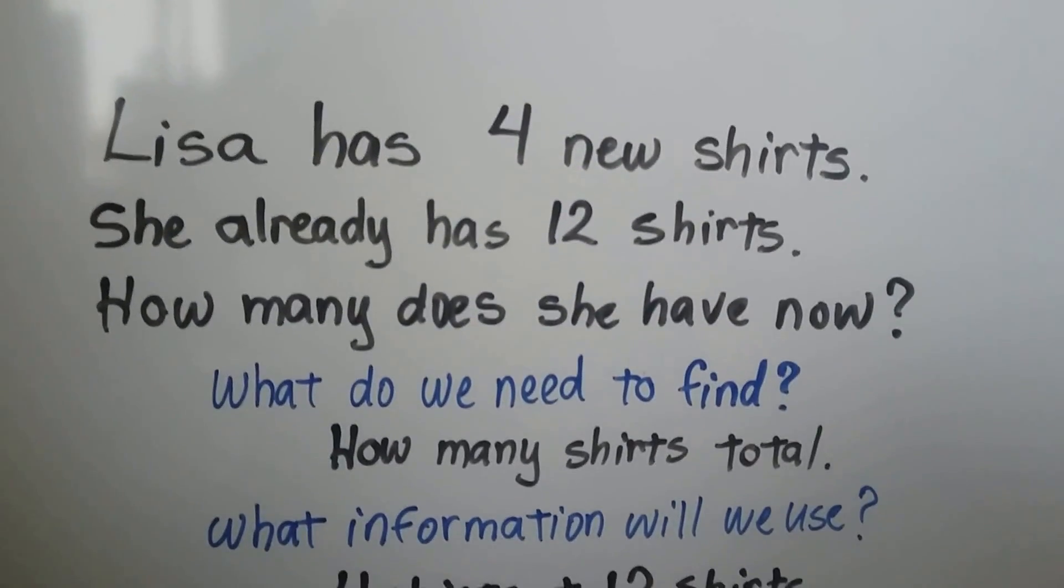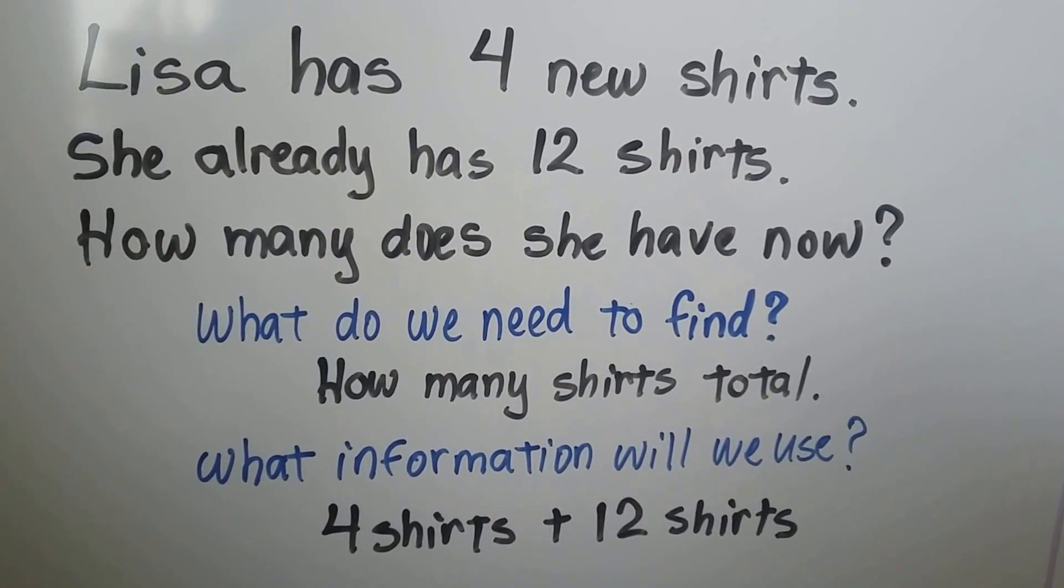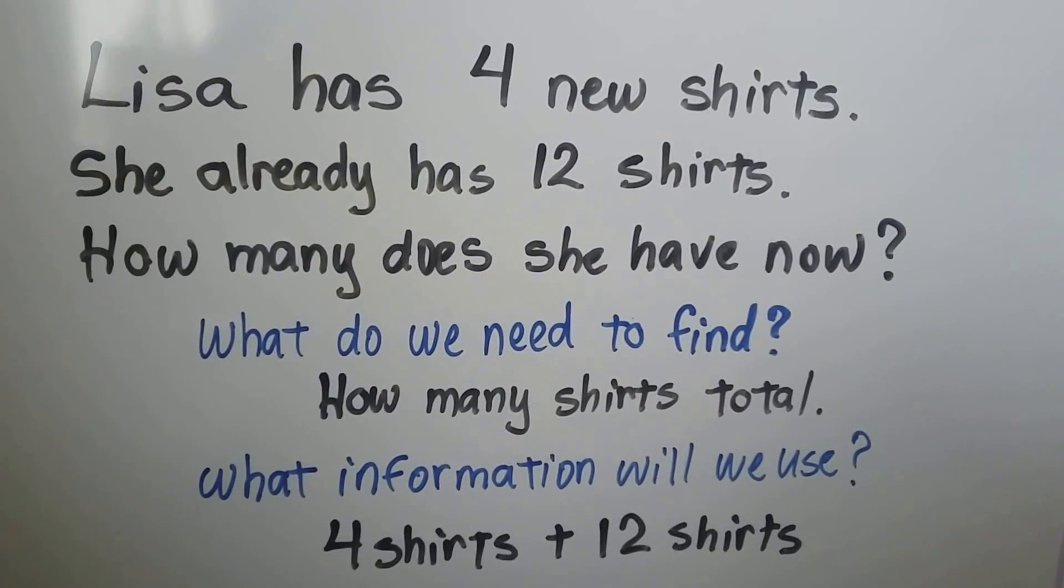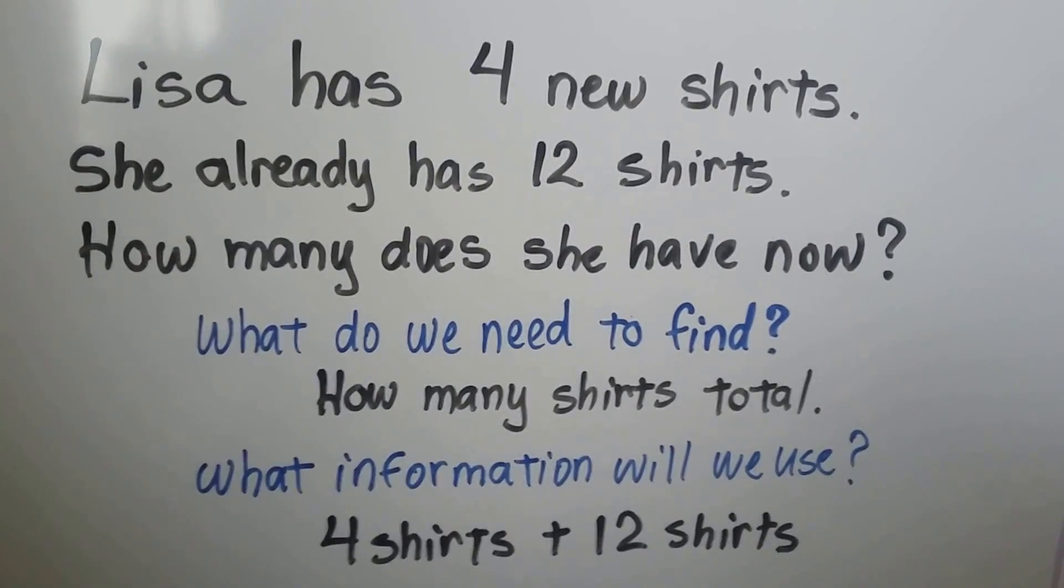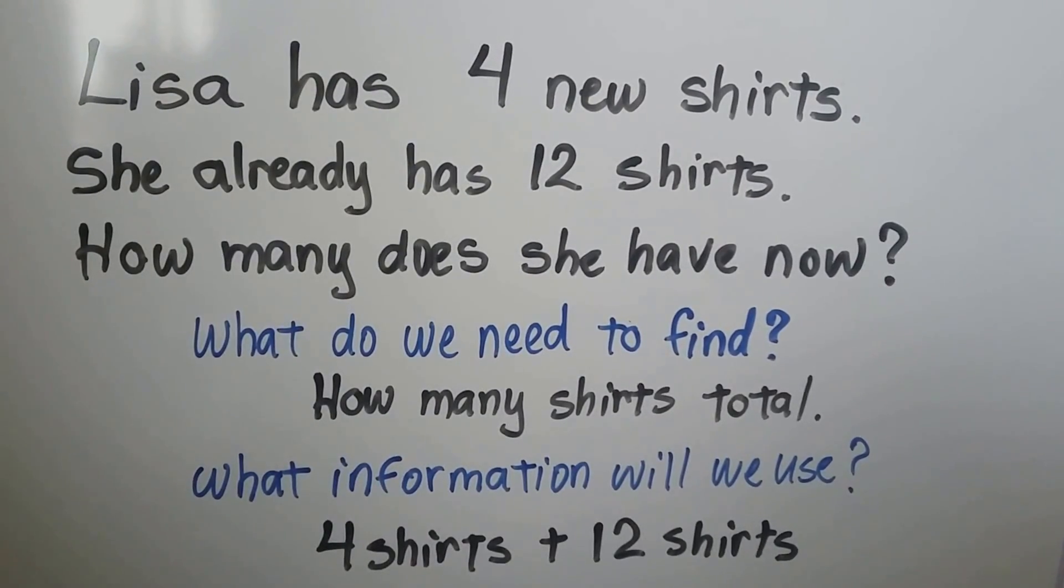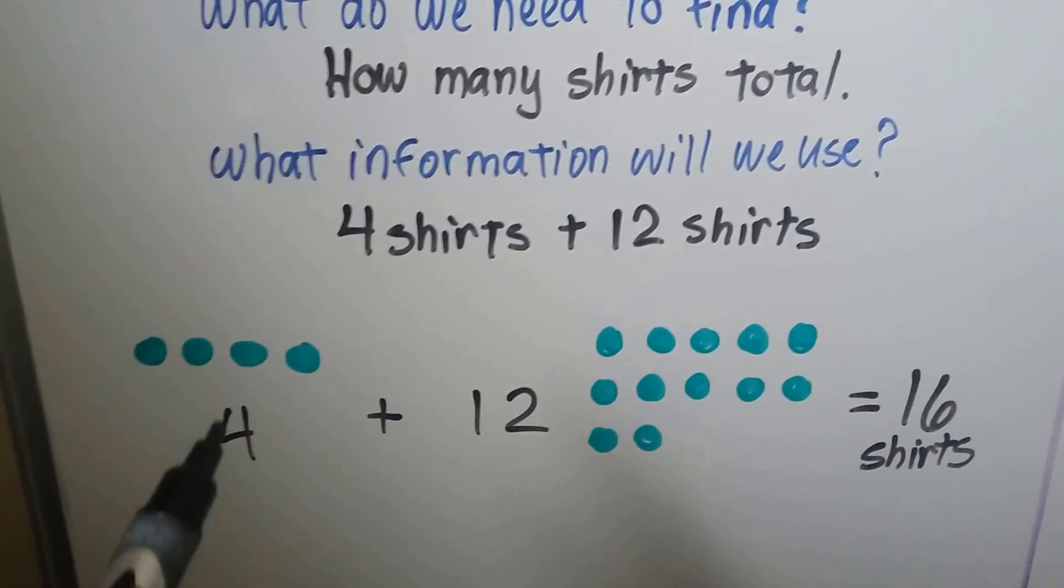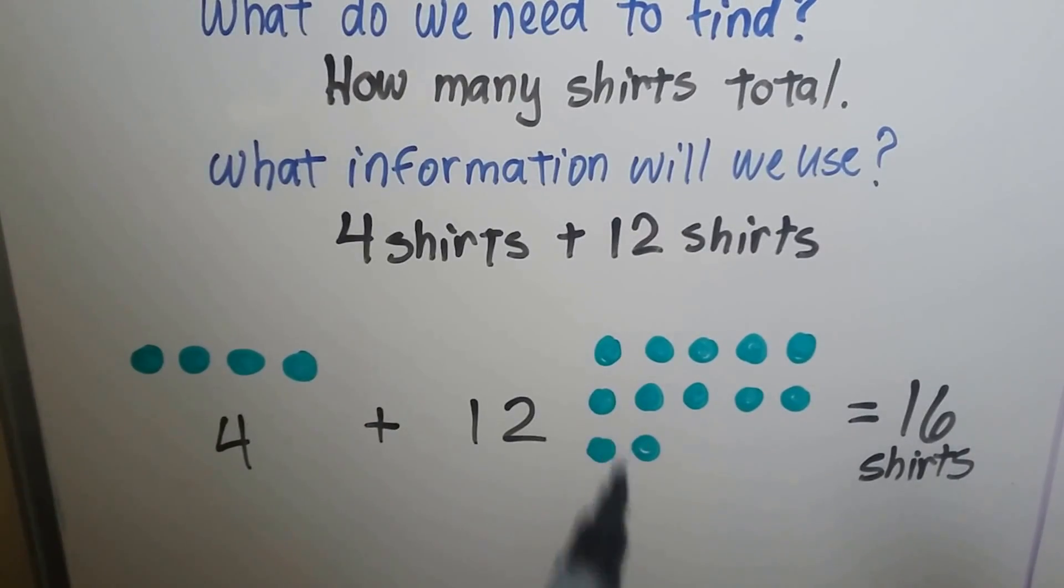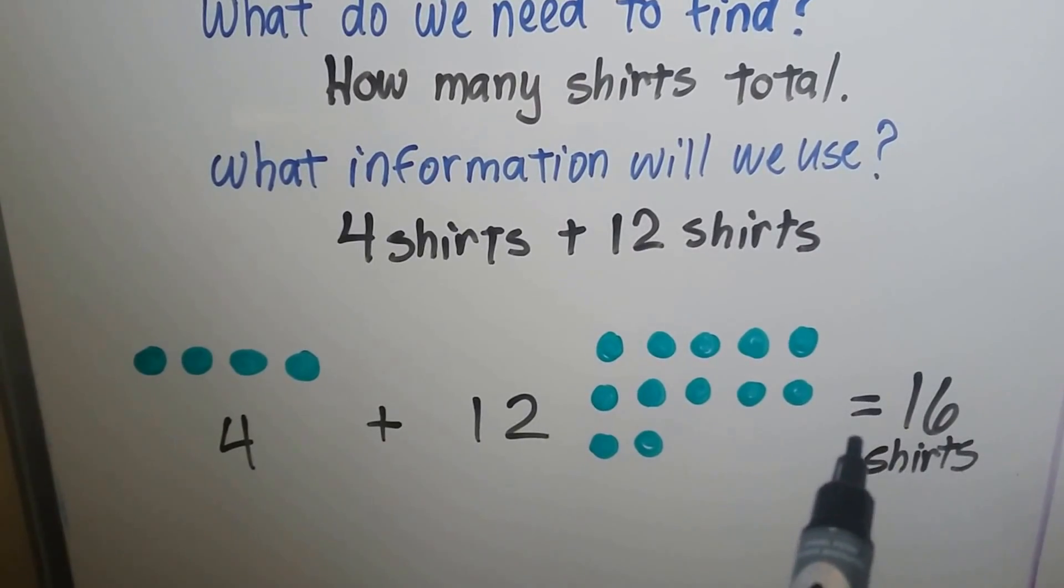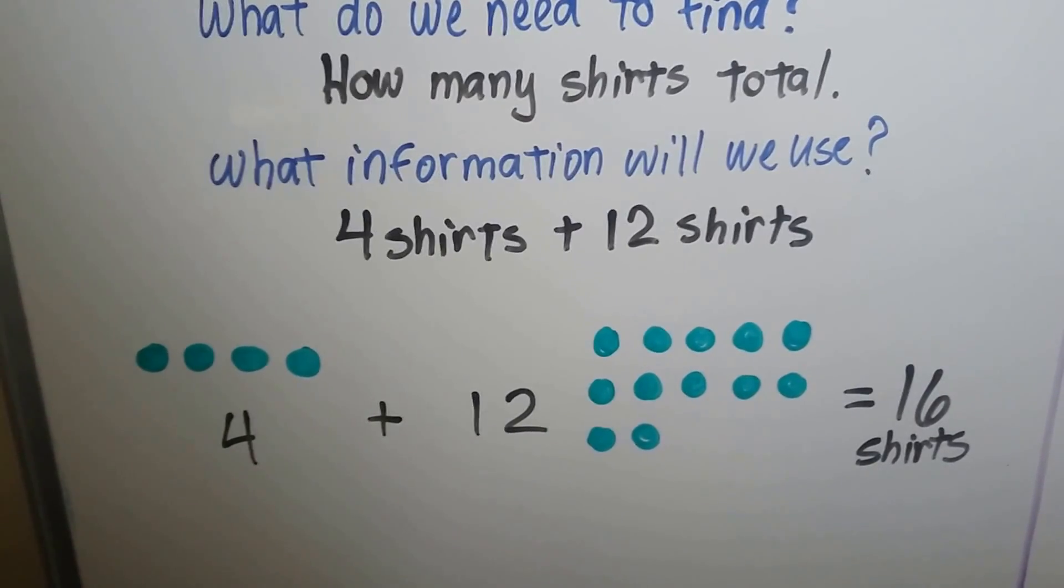Lisa has four new shirts. She already has twelve shirts. How many does she have now? What do we need to find? We need to find how many shirts she has total in all. What information will we use? That she has four shirts plus twelve shirts. We can make counters for the four new shirts and add it to the twelve shirts she already had. Four plus twelve is equal to sixteen shirts. That's how many shirts Lisa has now.